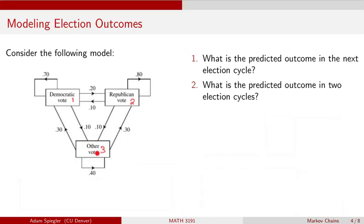In the third node, if somebody votes for a candidate that is not a Democrat or a Republican in the current election, there's a 30% chance they vote for a Democrat in the next election, a 30% chance they vote for a Republican, and a 40% chance that they vote for a candidate who is neither Democrat nor Republican again.